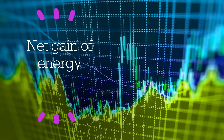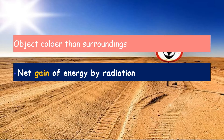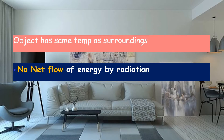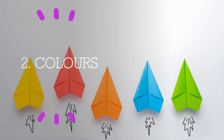An object that is colder than the surroundings will have a net gain of energy by radiation. But an object that is hotter than the surroundings will have a net loss of energy by radiation. And an object that has the same temperature as the surroundings will give us no net flow of energy by radiation — in other words, the net flow of energy by radiation will be zero in this case.